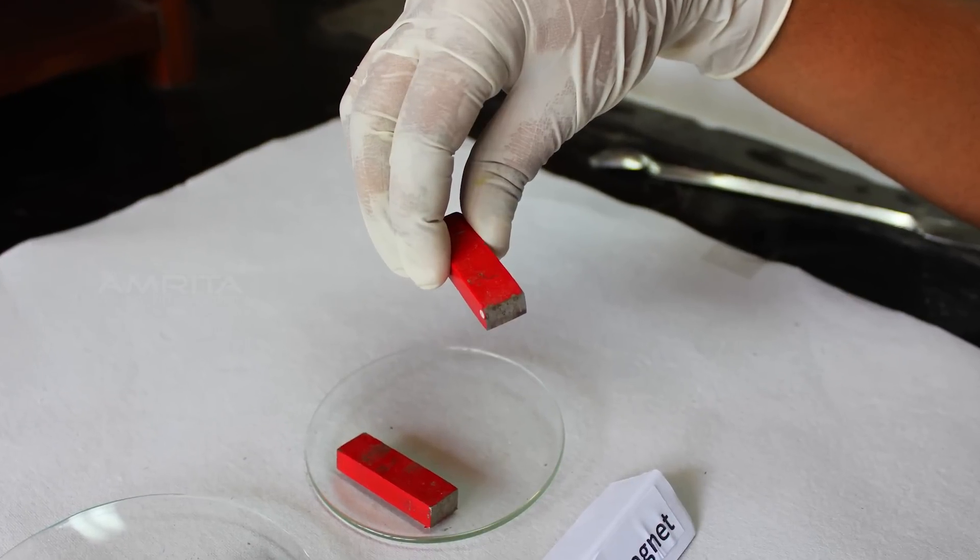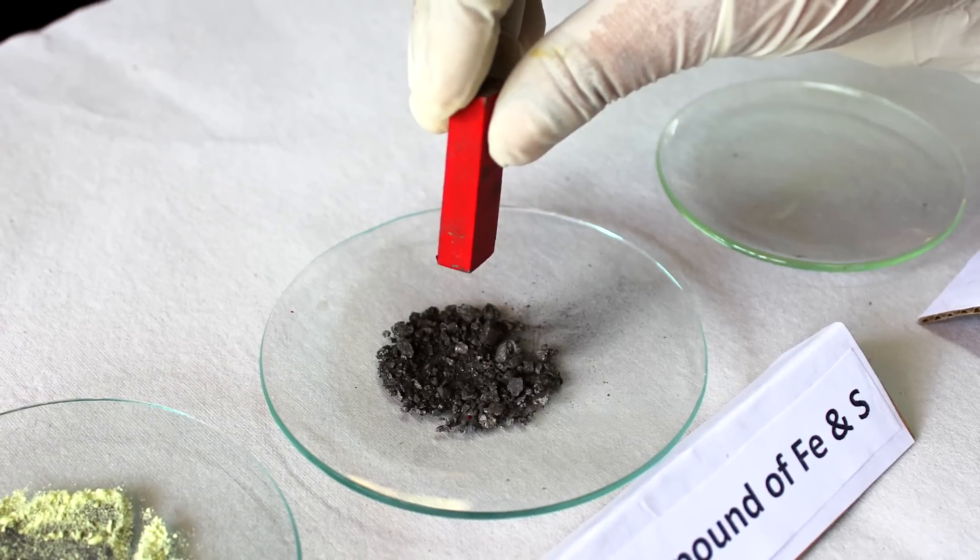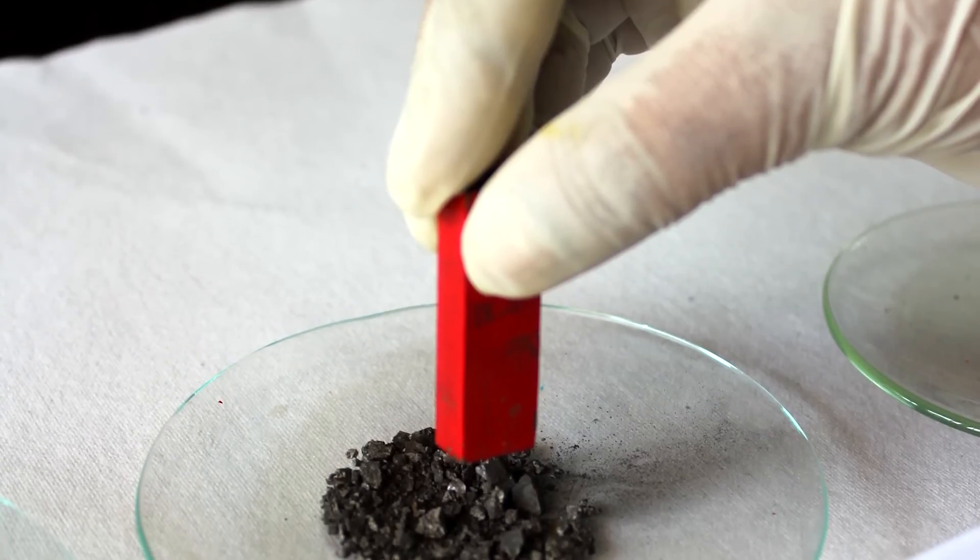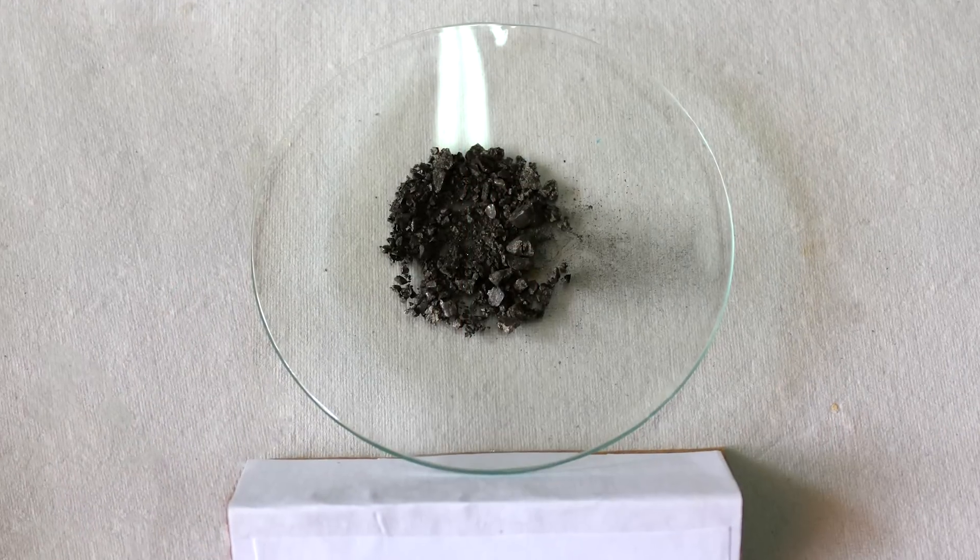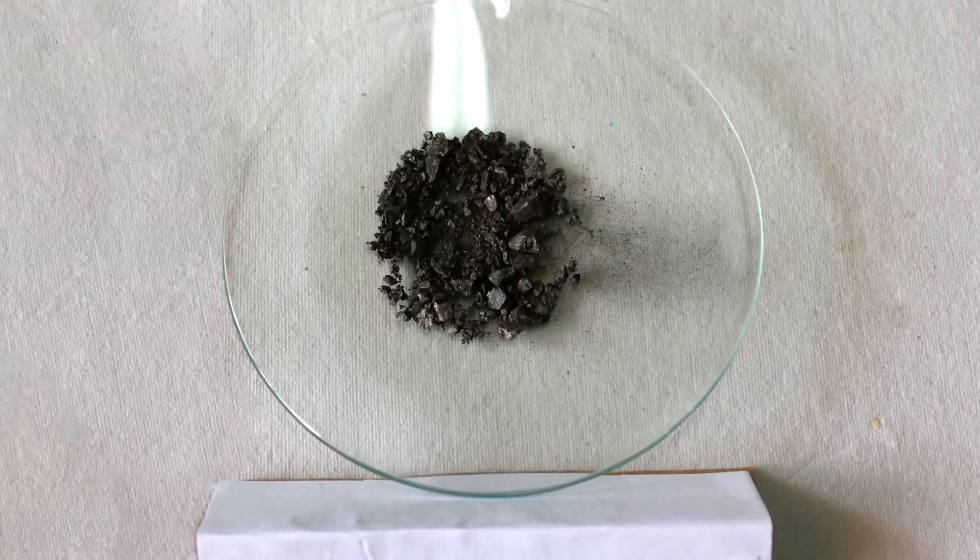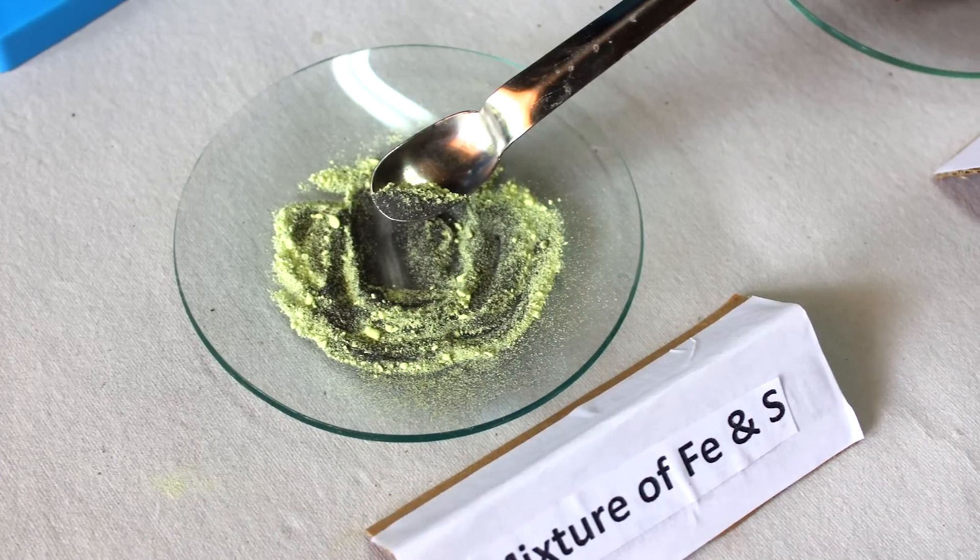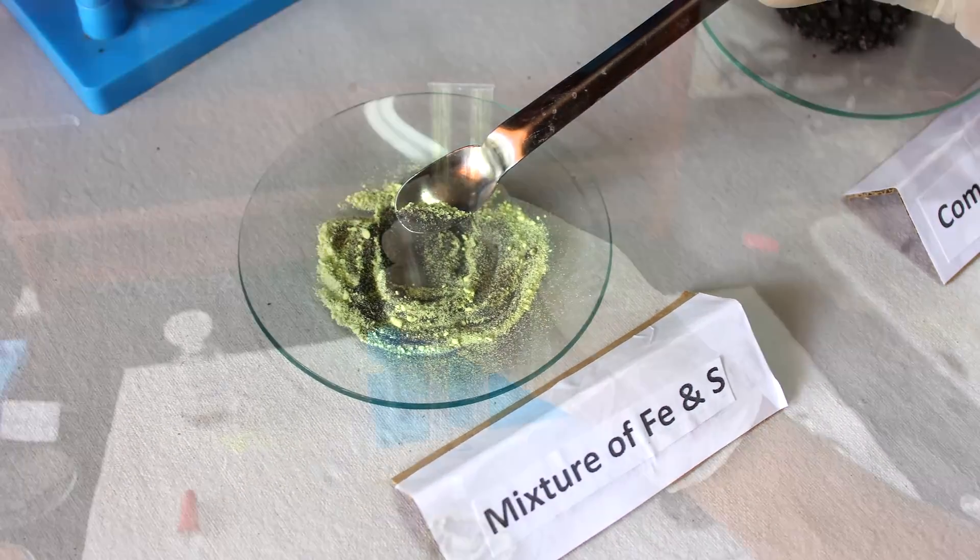Now, show the magnet over the watch glass in which the compound is taken. We can see that no particle attaches to the magnet, which indicates that iron has lost its properties on forming a compound.